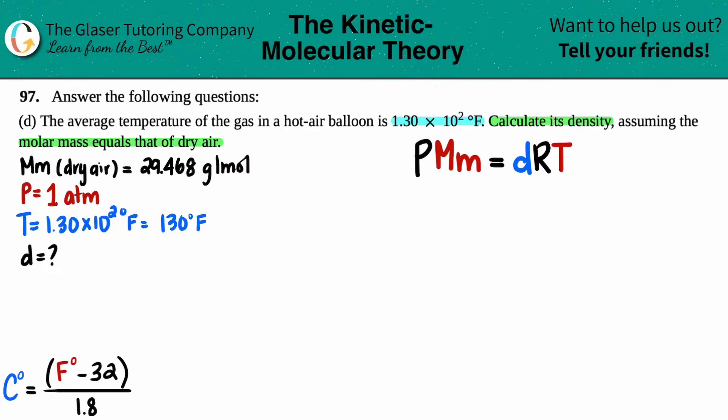So we have the pressure 1 atm. It was the same as the atmosphere. We now have the molar mass. They did tell us that it's going to be the same number. So I'm going to put 29.468 grams per mole.